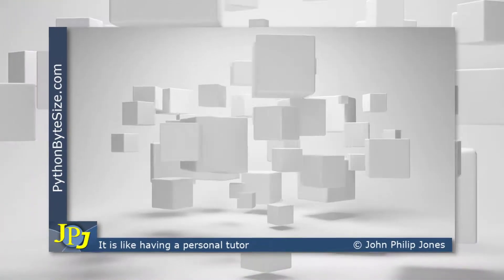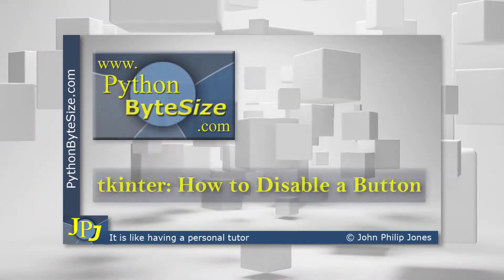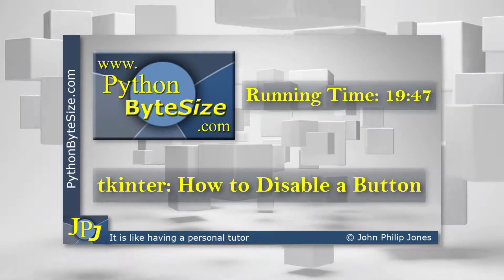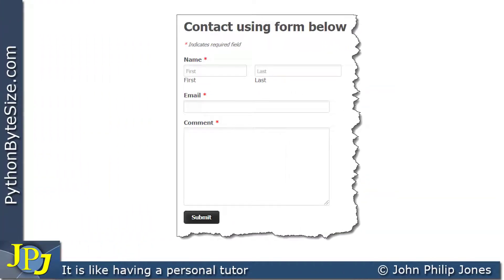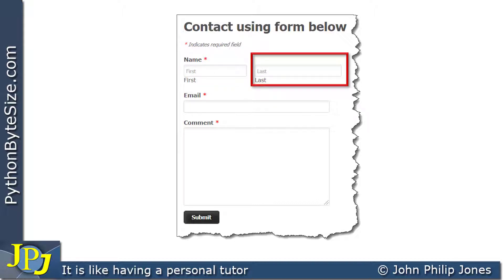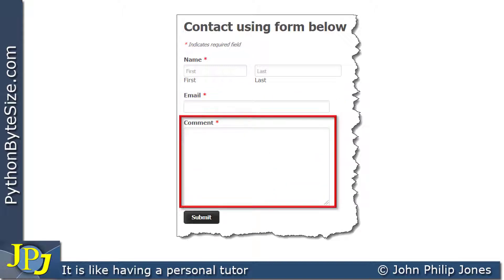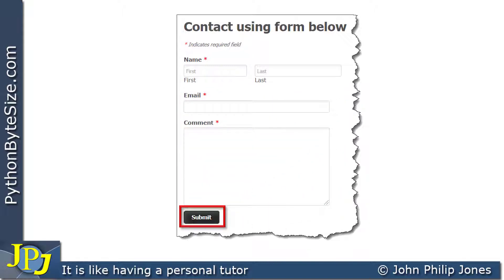In this video, I'm going to look at how we can disable a button when we use TKInter to develop a graphical user interface. A contact form, as you can see here, is something you would typically see in a piece of software. It allows somebody to enter their name, their email, and a comment, and then click a submit button.